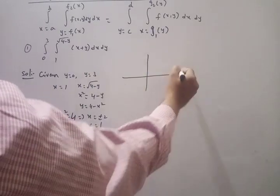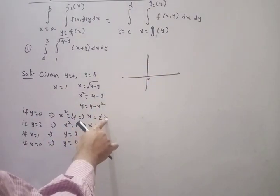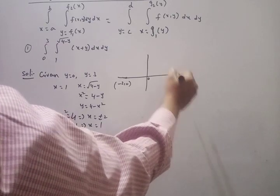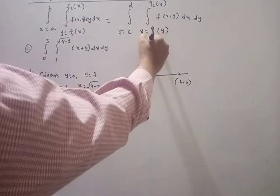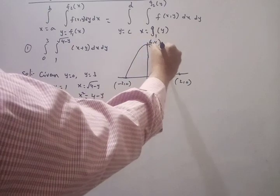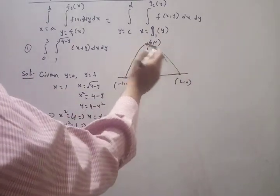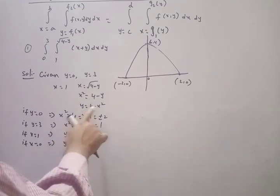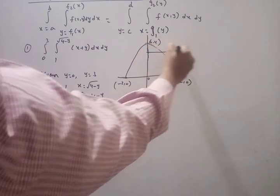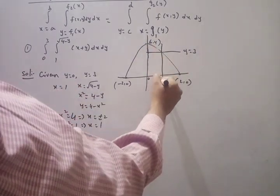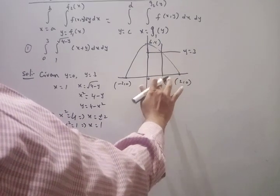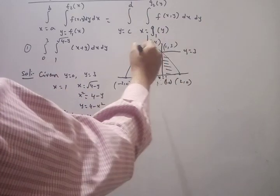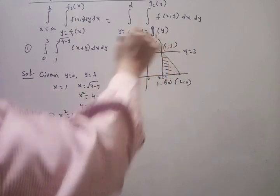Let us plot all points on the graph. X varies from −2 to +2, with points (−2, 0) and (2, 0). Y varies from 0 to 4, so the maximum is (0, 4). This gives us our parabola Y = 4−X². Then Y = 3 is a straight line, and X = 1 gives the point (1, 3). This region bounded by the parabola, the line Y=3, and X=1 is our region of integration.